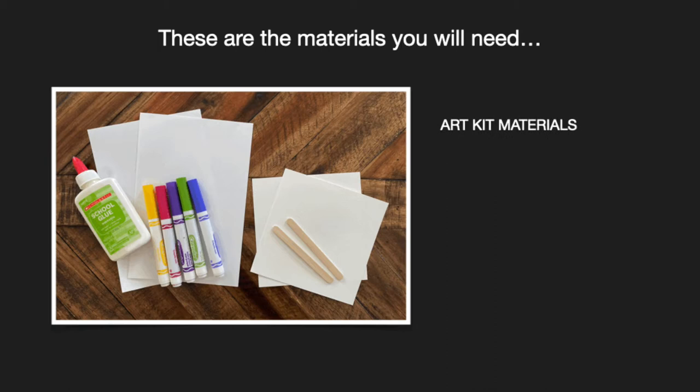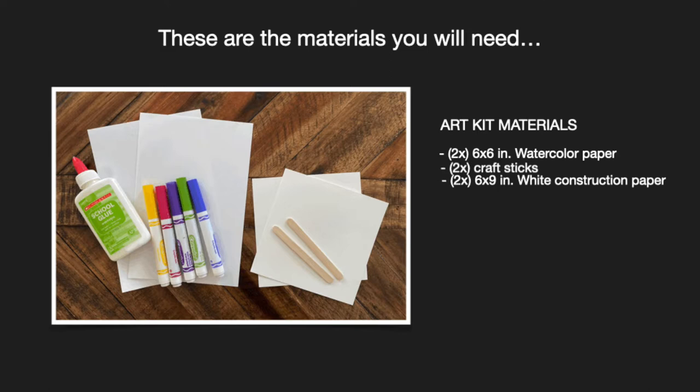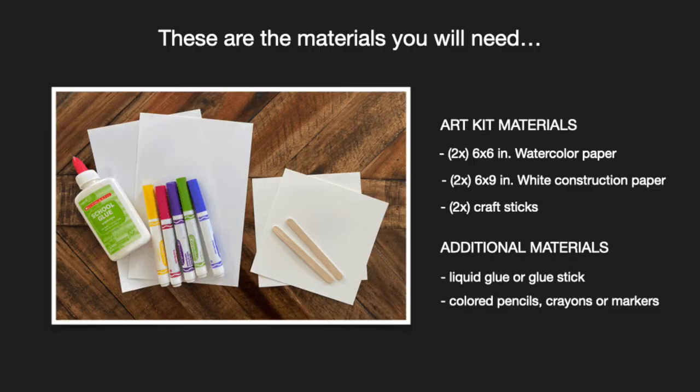Art kit materials include two pieces of six by six inch watercolor paper, two pieces of six by nine inch white construction paper, and two craft sticks. Additional materials include liquid glue or glue stick, colored pencils, crayons, or markers.